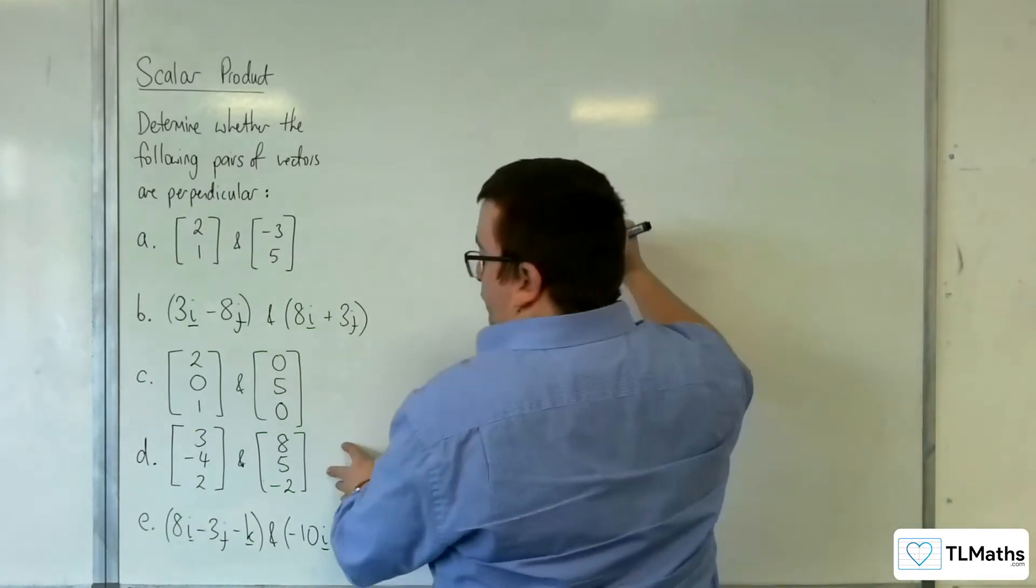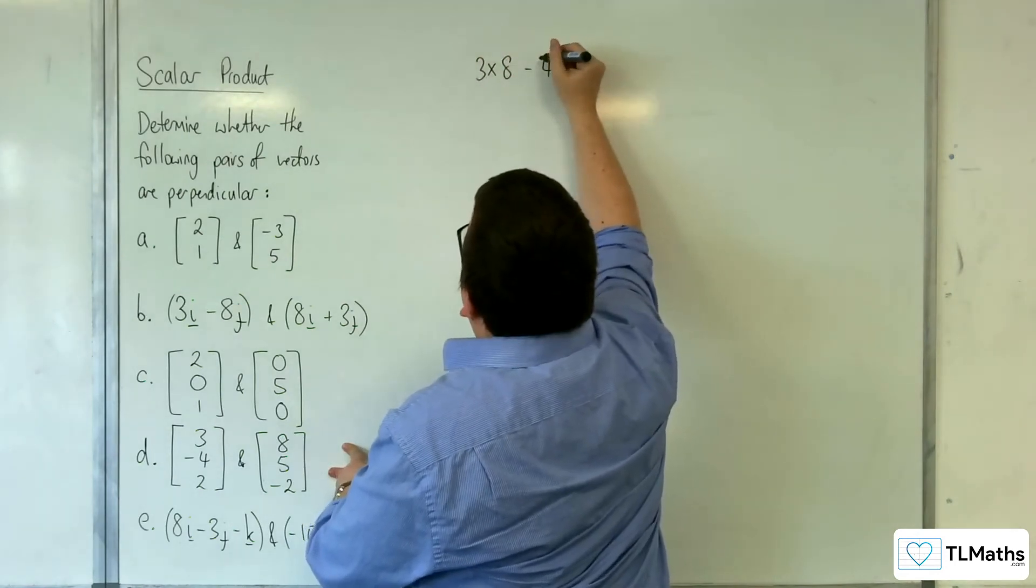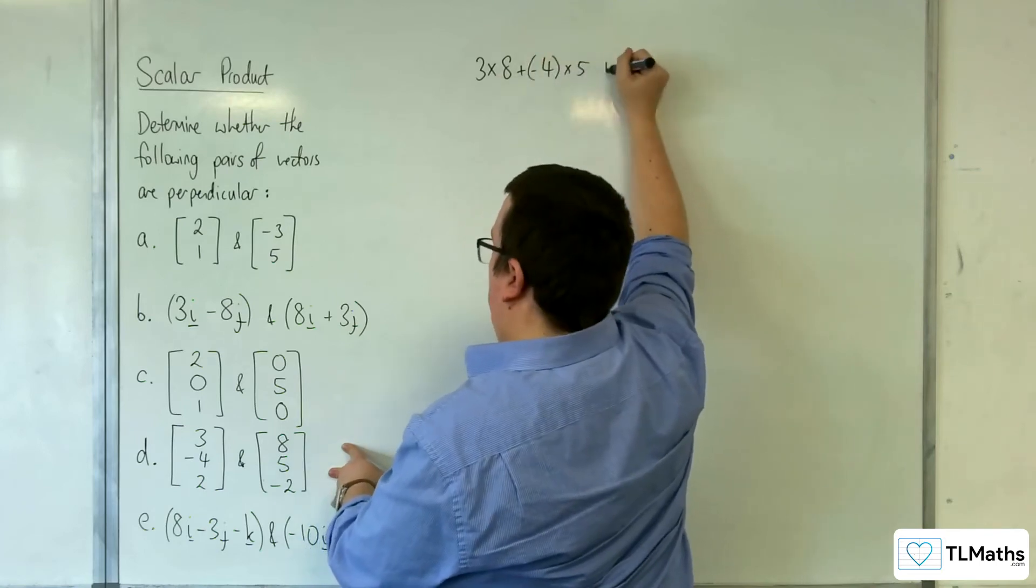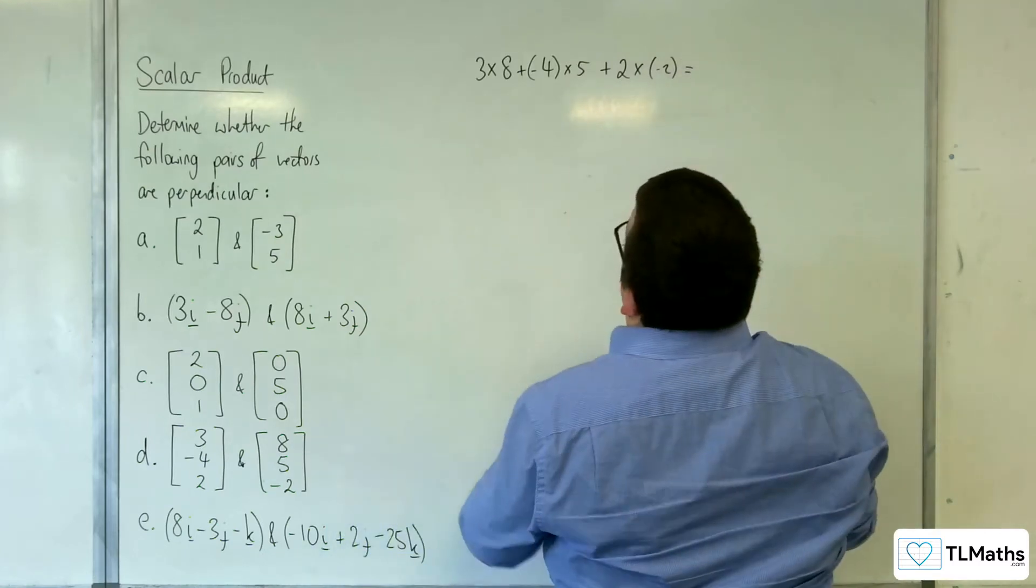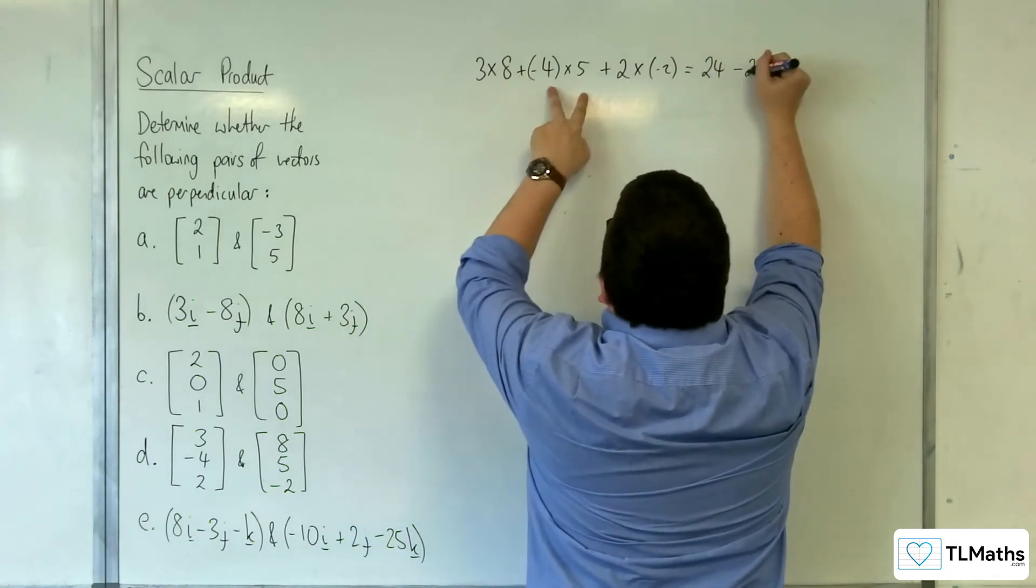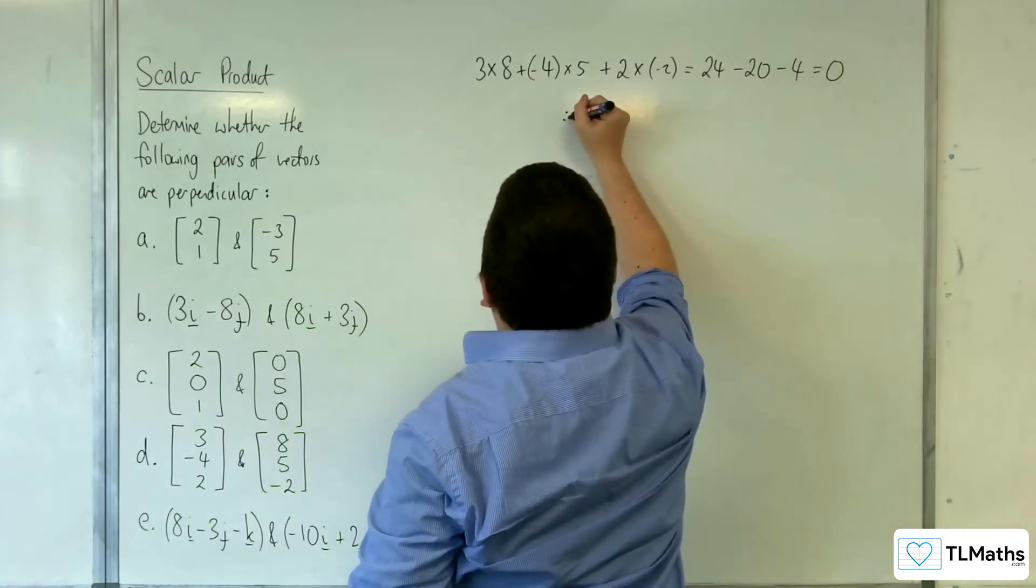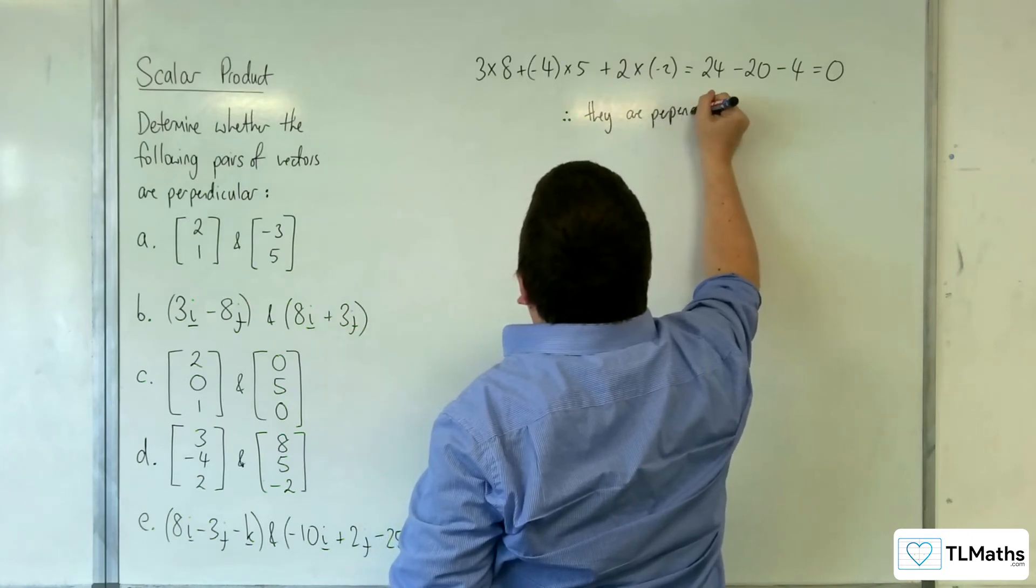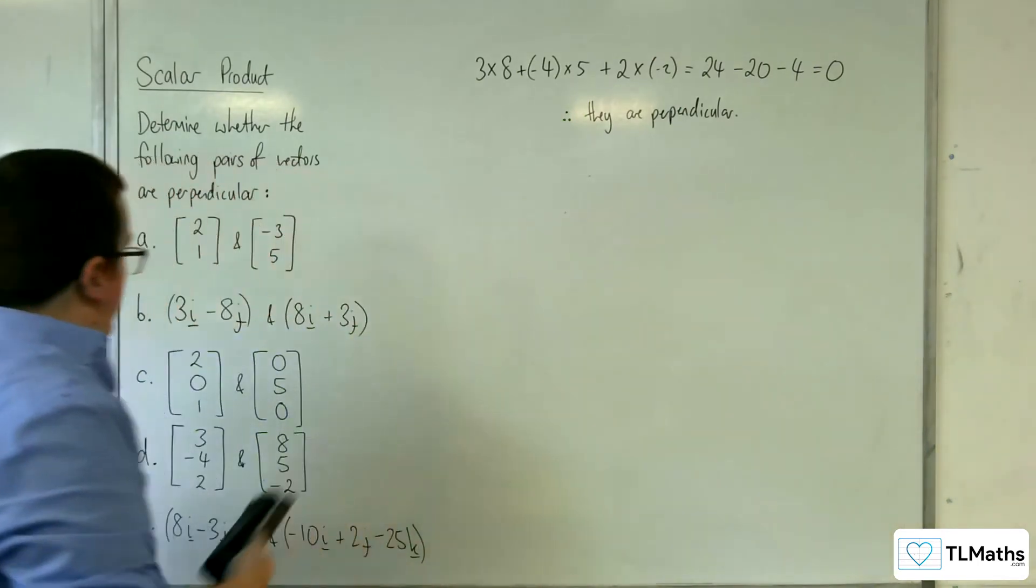Right, D. We've got 3 times 8, let's just put it as plus negative 4 times 5 plus 2 times negative 2. OK, so we've got 3 times 8, 8, 16, 24, take away 20, take away 4. And of course, that's going to be equal to 0. So therefore, they are perpendicular. OK, so that's D.